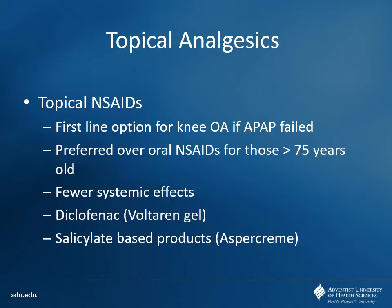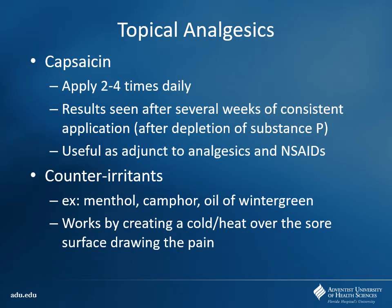One option is a topical NSAID. We have some aspirin-based products like aspirin cream, and we also have diclofenac or Voltaren gel — patients can apply it locally for a nice anti-inflammatory effect. This is usually better for osteoarthritis, used for mild disease with a few joints affected. It's preferred in older patients who probably shouldn't get systemic NSAIDs due to bleeding risk or GI effects.